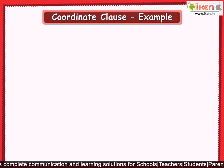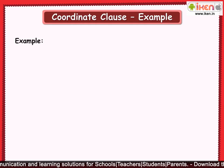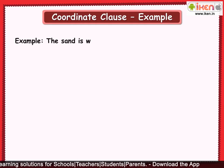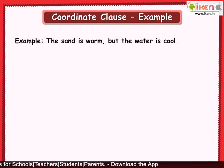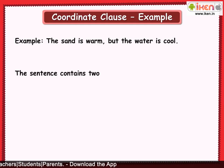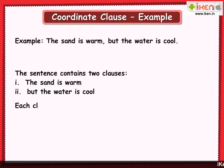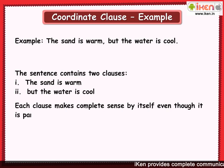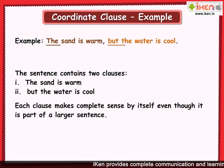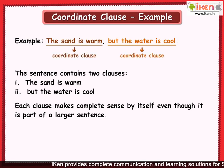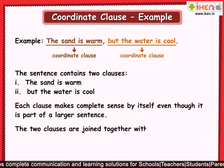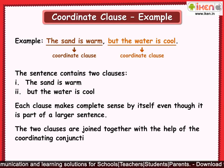Let's take a look at one more example of a coordinate clause: 'The sand is warm, but the water is cool.' The sentence contains two clauses: 'The sand is warm' and 'the water is cool.' Each clause makes complete sense by itself. The two clauses are called coordinate or independent clauses. They are joined together with the coordinating conjunction 'but.'